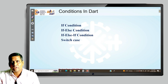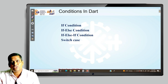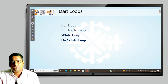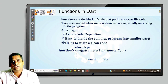Dart has the same conditional statements as C and C++: if, if-else, if-else-if, and switch. Since you have already practiced all these conditions in C and C++, there is no need for much explanation. The loops available in Dart are for loop, forEach loop, while loop, and do-while loop. The difference between while and do-while is that in do-while, the loop executes at least once, whereas while checks the condition first before executing.